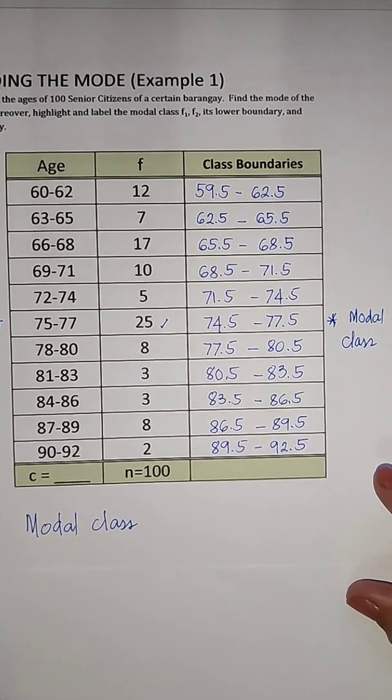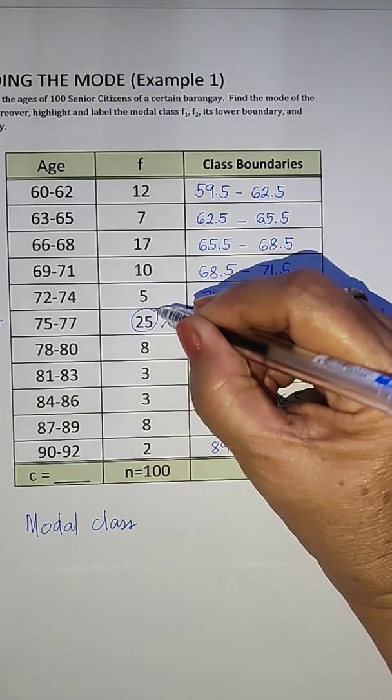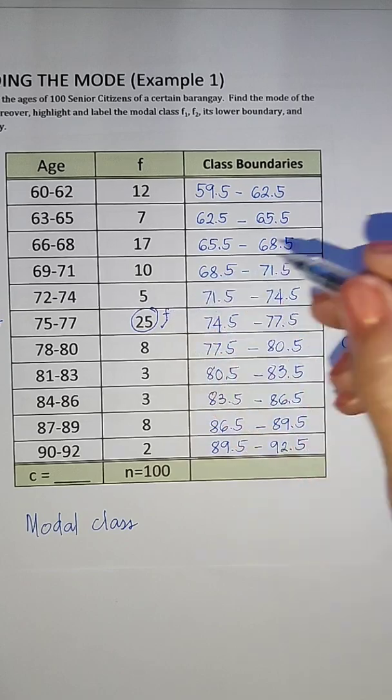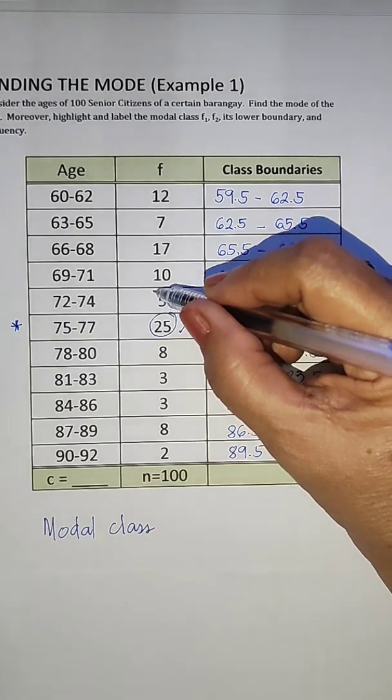Now, after identifying the modal class, we will now identify the frequencies which are asked in our formula. Our 25 here is the frequency of the modal class, and then we have our F1 is this, which is lower than the median class.